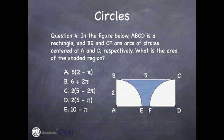Take a look at this example. Here's what I'm talking about. We'll do this together. Question number four. In the figure below, ABCD is a rectangle. And BE and CF are arcs of circles centered at A and D respectively. What is the area of the shaded region?